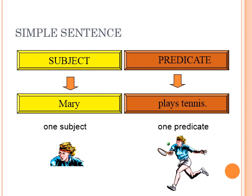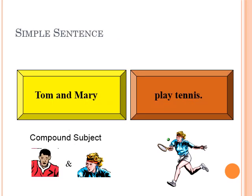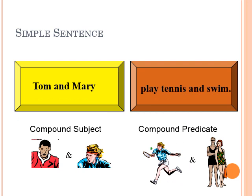A simple sentence is when there is a subject and a predicate — for example, 'Mary plays tennis,' where Mary is the subject and plays tennis is the predicate. 'Tom and Mary play tennis' has a compound subject, but it acts as a single subject, so it is also a simple sentence. 'Tom and Mary play tennis and swim' has a compound predicate but is still a simple sentence.